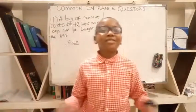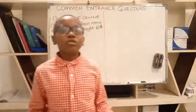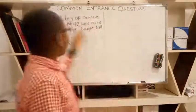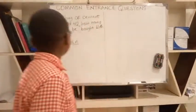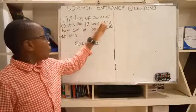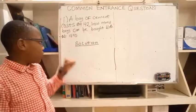Welcome to GMAETS 41 Rising Star Kids Channel. Today I'll be teaching you a word problem leading to multiplication or division, a common entrance question. The question is: A bag of cement costs 42 naira. How many bags can be bought with 1890 naira?